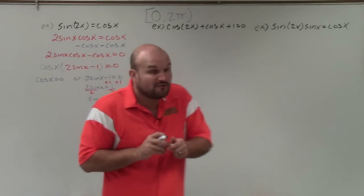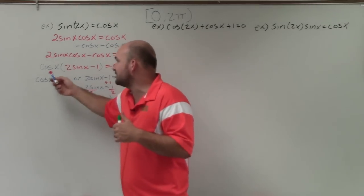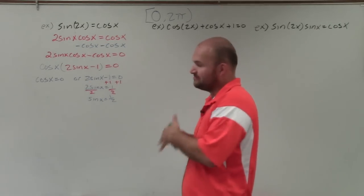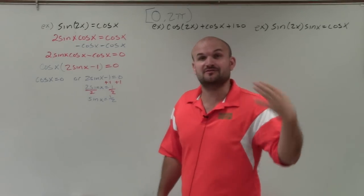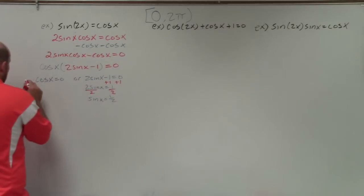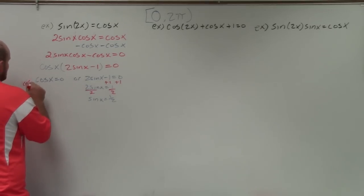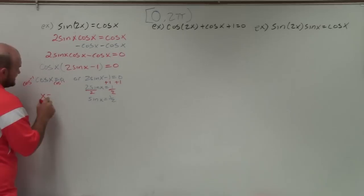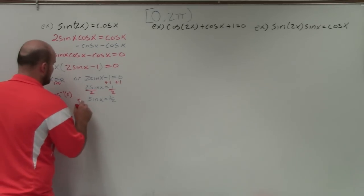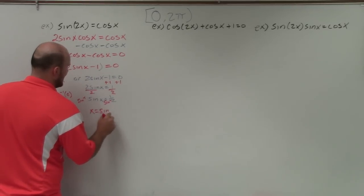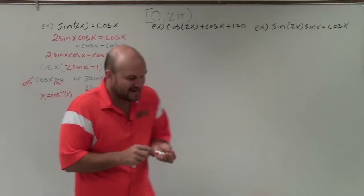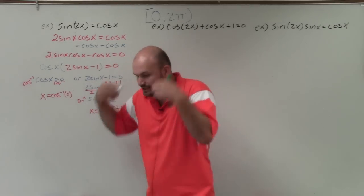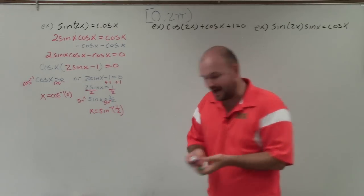To solve for x, we need to find the values. What we're really doing is taking the inverse function on both sides to isolate x. Taking cosine inverse of both sides gives x equals cosine inverse of 0, and taking the inverse sine of both sides gives x equals sine inverse of 1 half. In other words, we're asking: the cosine of what angle equals 0, and the sine of what angle equals 1 half? To find those solutions, we go back to the unit circle.